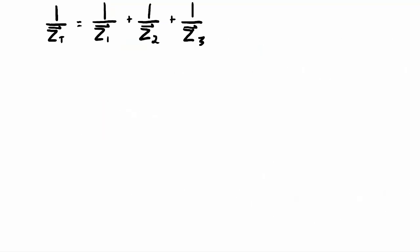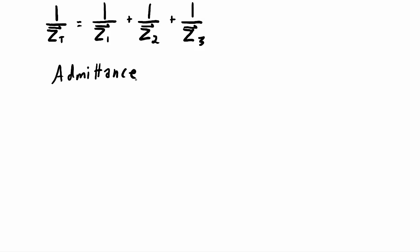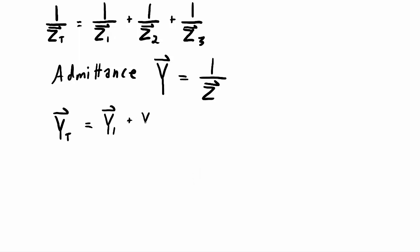I've rewritten the equation here just to make it neater, and if I had more components in parallel, I would add 1/Z4 plus 1/Z5 plus 1/Z6 all the way up to 1/Zn, however many components I have. At this point, I want to introduce the concept of admittance, denoted by Y. It is also a vector component, and it equals the inverse of impedance. The total admittance equals Y1 plus Y2 plus Y3, and sometimes it's easier to calculate in admittances, then take the inverse to get impedance back.